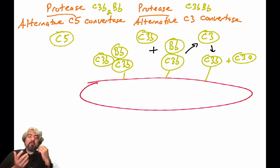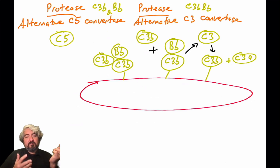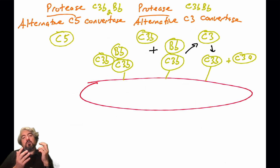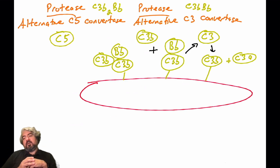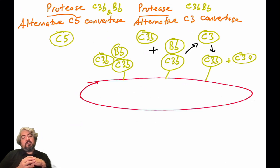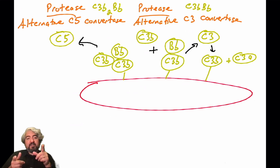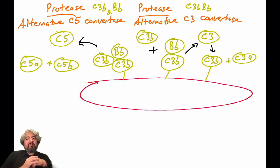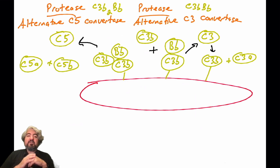C5 is a complement protein present in your humor and interstitial fluids. When complement is being activated, the alternative C5 convertase will cleave C5 into C5a and C5b. There is also another C5 convertase formed via other pathways, but in this instance we're focusing on the alternative C5 convertase.